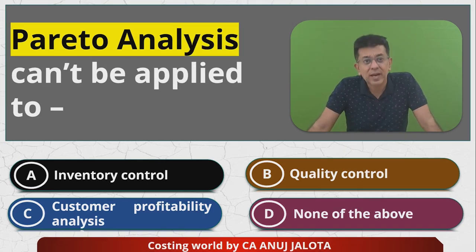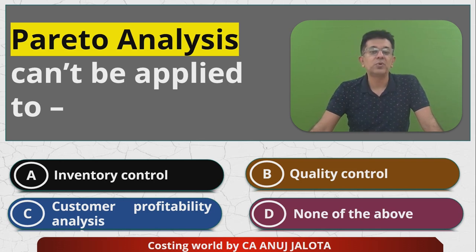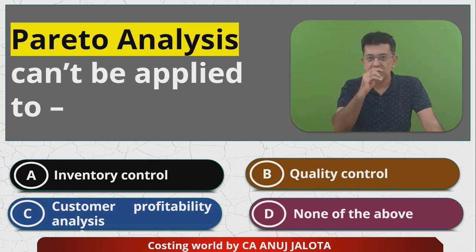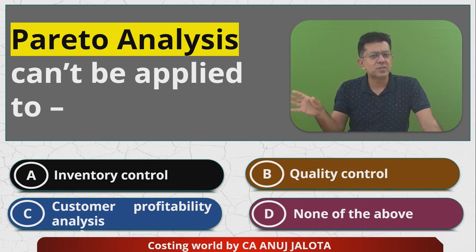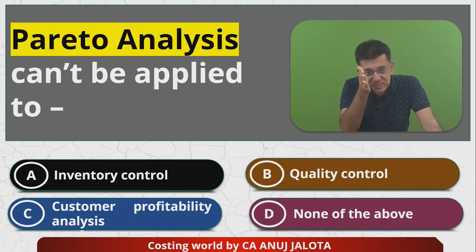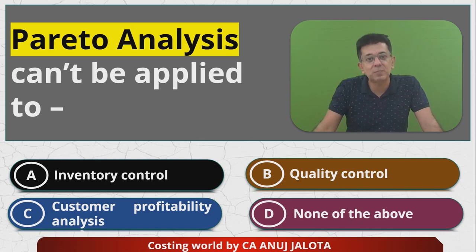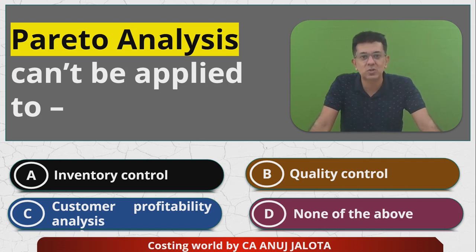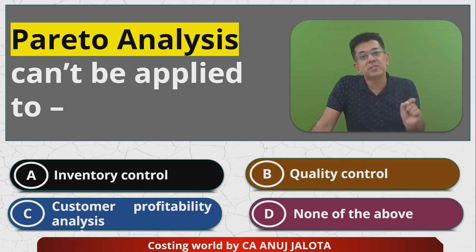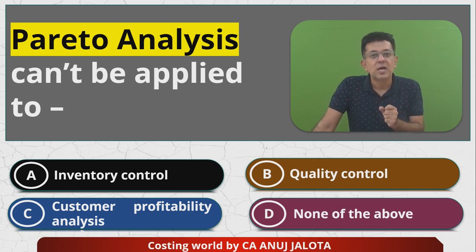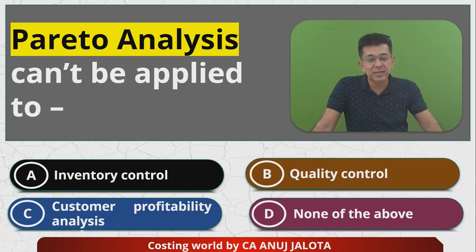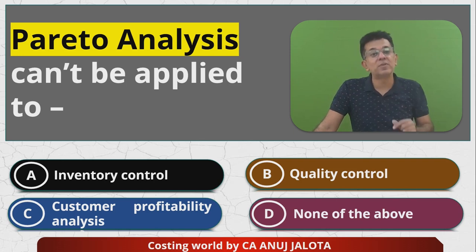Pareto analysis is in fact applicable to inventory control. You did that in the form of category A, category B, and category C stocks. Category A stocks are those which are 70% in terms of value but only 10% in terms of number. Category C stocks are the least important. Following Pareto analysis, we say 80% of the entire value of stocks is because of only 20% of the quantity of stocks. So concentrate on these stocks — there should be very strict control on these 20% items, because if they get stolen or lost, the company will be losing very high value.